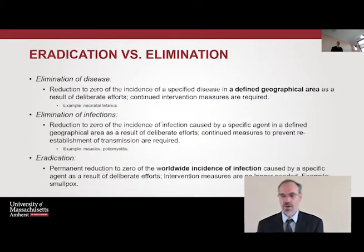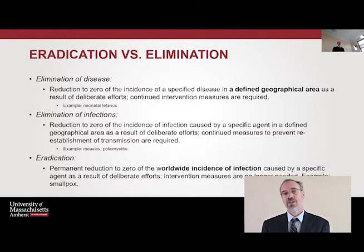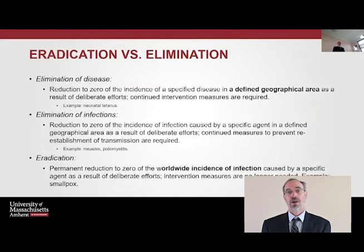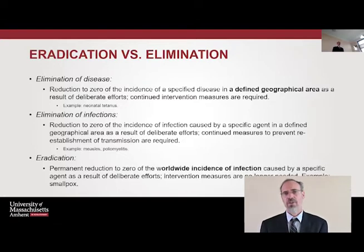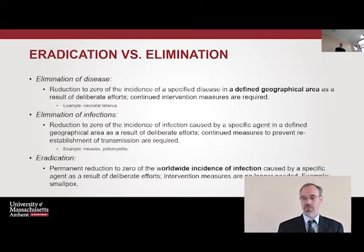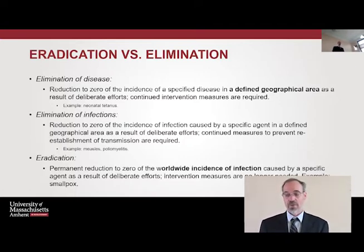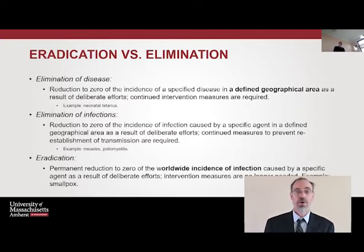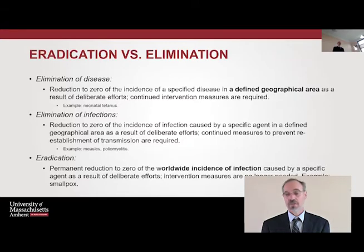Let's get some definitions out of the way. Elimination of disease is the reduction to zero of the incidence of a specified disease in a defined geographic area, as a result of deliberate efforts — and continued intervention measures are required. An example is neonatal tetanus, which has been eliminated from many countries. Elimination of infection is the reduction to zero of the incidence of infection caused by a specific agent in a defined geographic area; continued measures to prevent reestablishment of transmission are required. Examples include measles and polio, where vaccines have prevented transmission in many areas but concerted efforts must continue.